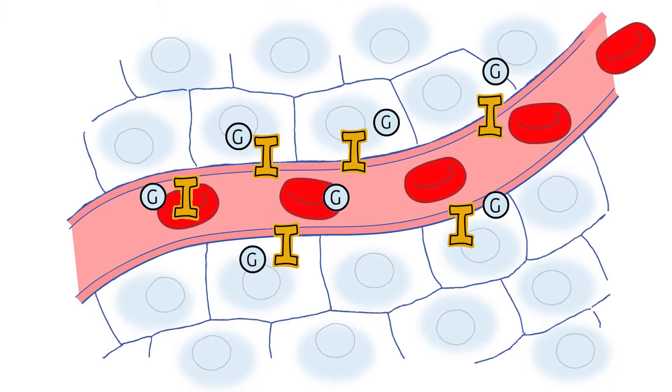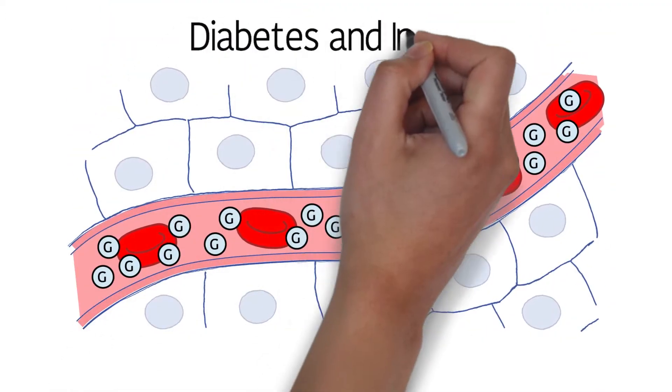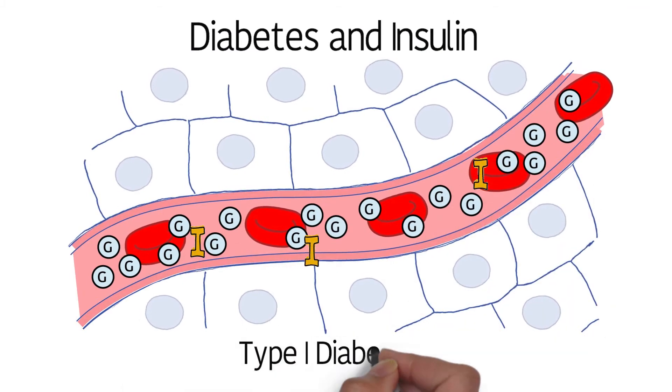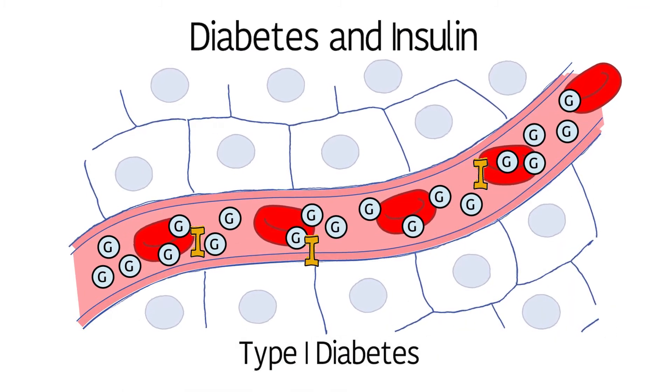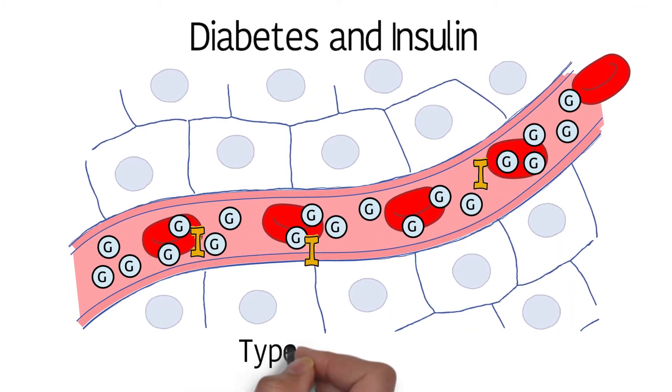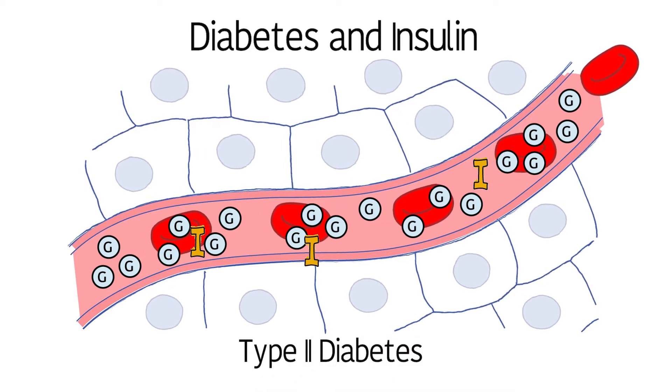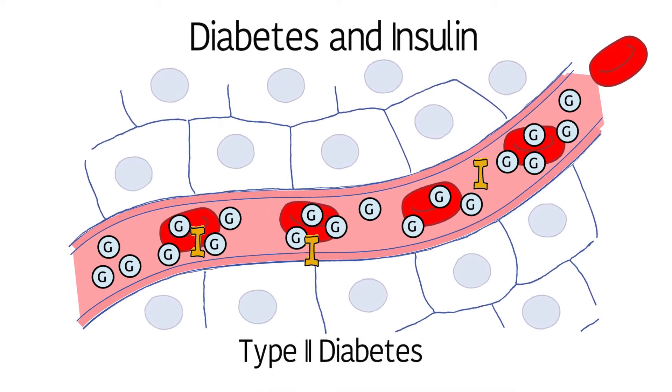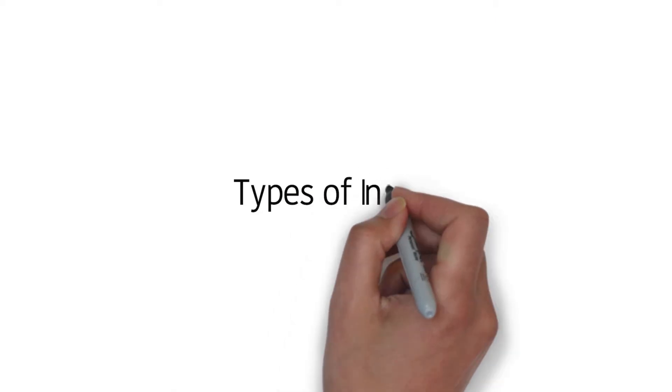The most common problem linked to insulin is diabetes. With type 1 diabetes, your body makes very little or no insulin. With type 2 diabetes, your body doesn't make enough insulin, or your body doesn't react to it normally.